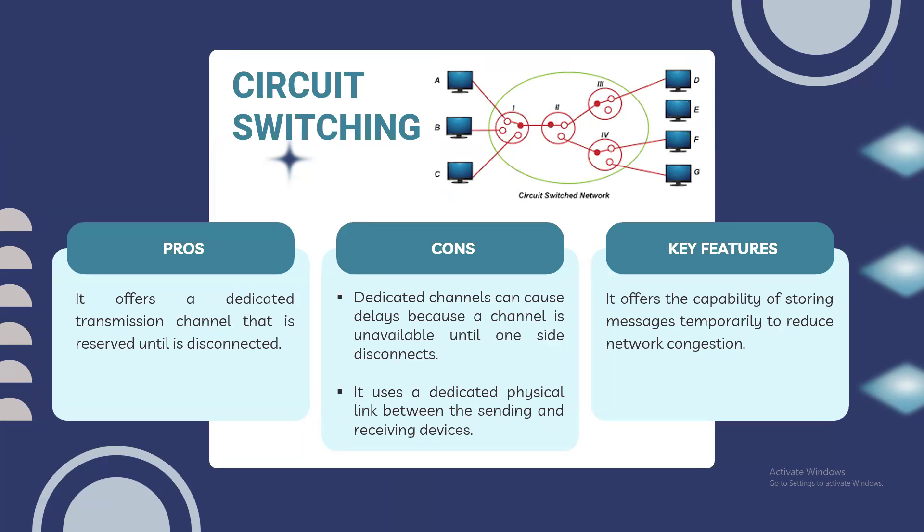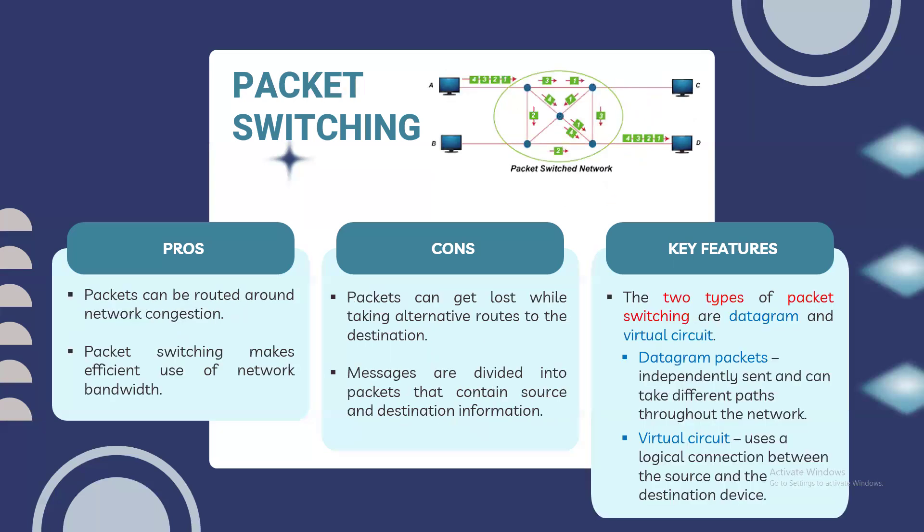The internet's backbone is a complex web of cables and routers that facilitate data transmission. Computers communicate using unique IP addresses, similar to personal mailing addresses. Websites reside on servers that can send and receive information upon request. Regarding circuit switching: it offers a dedicated transmission channel like in telephone networks — a centralized, dynamic, dedicated channel — but can cause delay because the channel is unavailable until one side disconnects. It also offers the capability of storing messages temporarily to reduce network congestion.